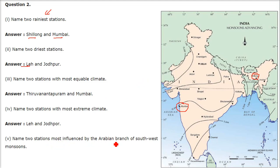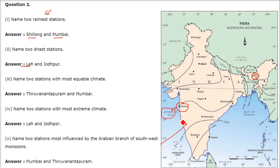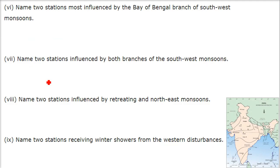Name two stations most influenced by the Arabian branch of the South West Monsoon. This is the Arabian Sea, this is the Arabian branch — also called Dakshin Pashim Monsoon. The answer is Mumbai and Thiruvananthapuram.